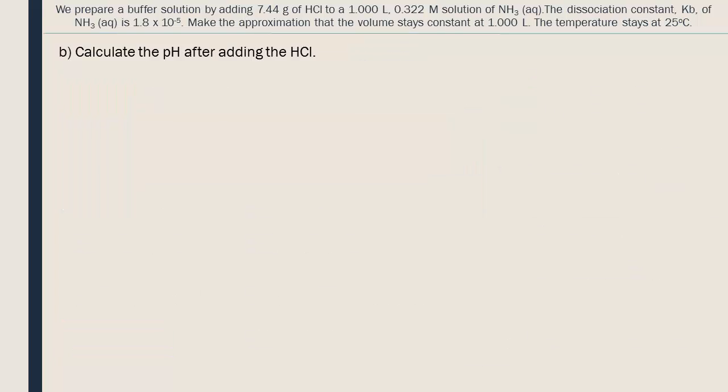Part B. Let's start by writing the equation. The Cl- from the HCl does not react, so we don't include it. We put an arrow that only goes in one direction, because HCl is a strong acid that will react completely in solution. We will use an ICE table.